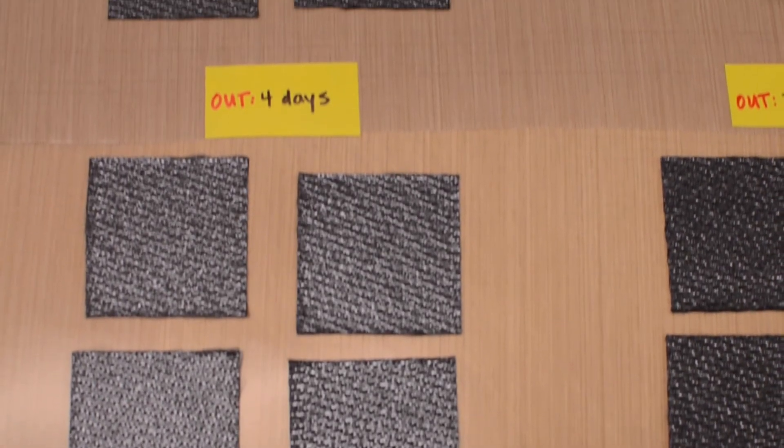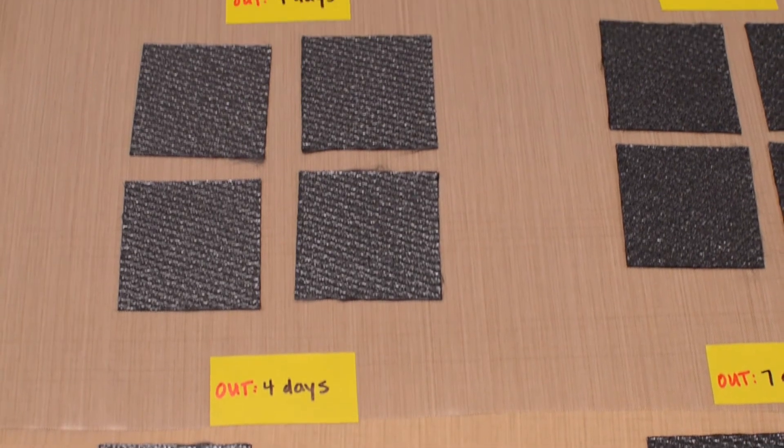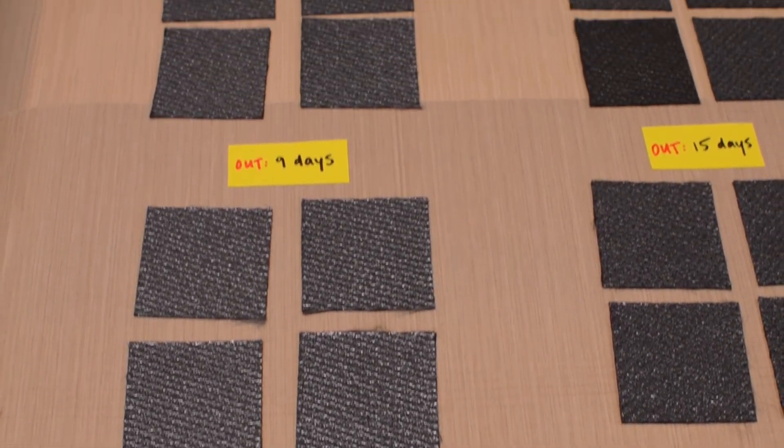We discovered that by aging prepreg for several days at room temperature, we were able to significantly reduce the tack and increase the mobility of the trapped air. Through these strategies, we were able to reduce surface porosity as much as 99%.